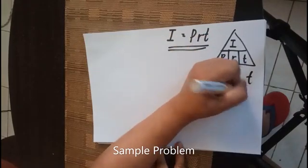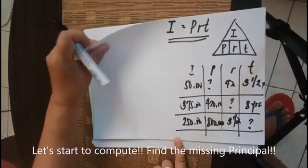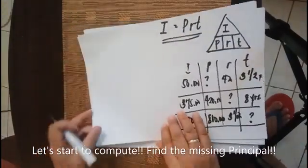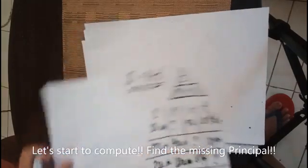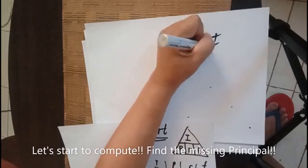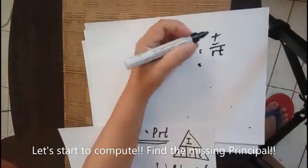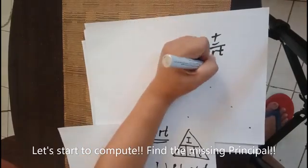And we're going to pay it on 3.5 years. Let's compute first the missing principal, so P equals I over R multiplied by T. So we have the interest of $50,000.